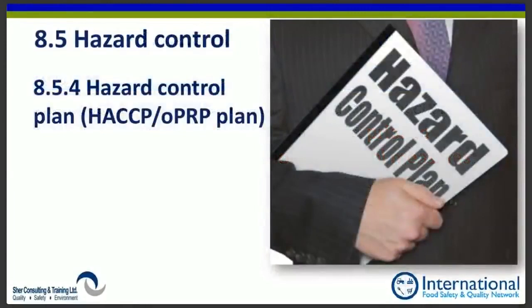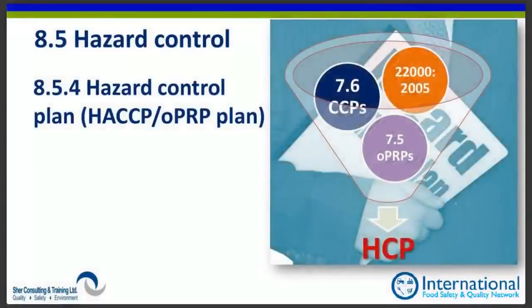A new term: 'hazard control plan' — also called the HACCP/OPRP plan. Previously in 2005, item 7.5 covered OPRPs and item 7.6 covered CCPs separately. Now everything has been combined into section 8.5.4, the hazard control plan. This reinforces that it does not make a practical difference whether you call something a CCP or an OPRP — you will be doing essentially the same things.